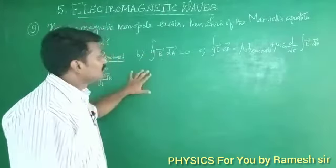And then C is integral B.dL equal to mu naught I enclosed plus mu naught epsilon naught dE/dt. And D is integral E.dL equal to minus d phi by dt.